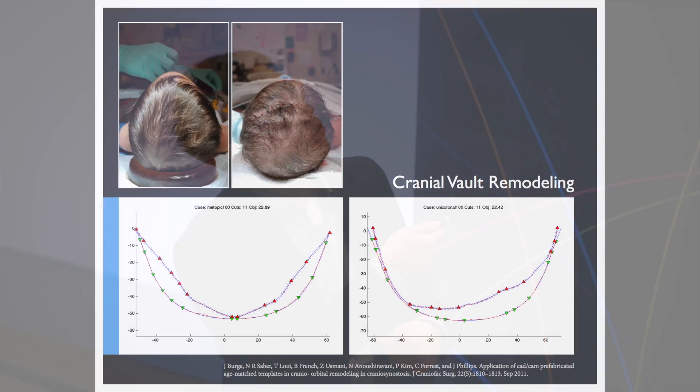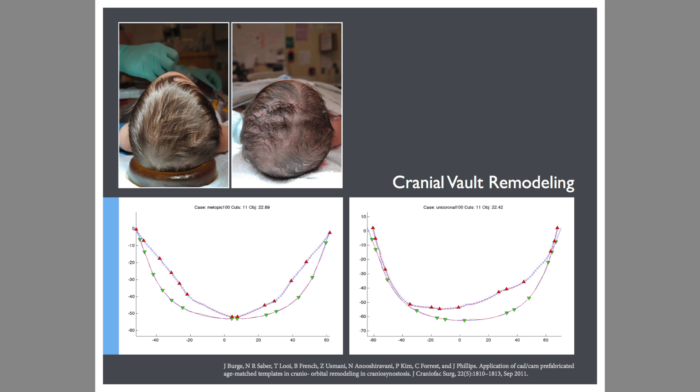Each year, over 100 infants in Canada are afflicted with a condition called craniosynostosis. The soft bones of the skull prematurely fuse, resulting in visible facial deformities such as centerline bulging or frontal asymmetry. Left untreated, there are very serious medical risks for the child, including visual impairment and stunted mental development.